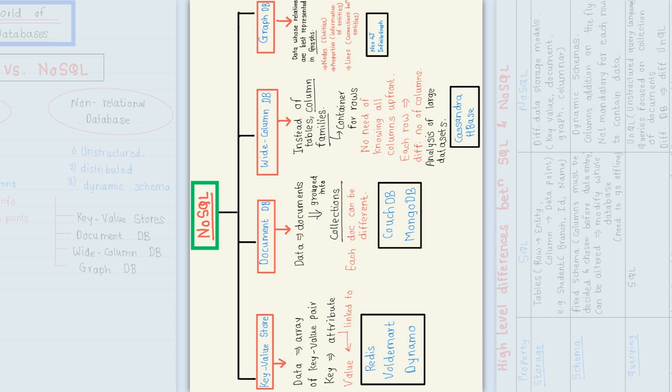Within NoSQL, there are multiple different types. For key-value store, you go for Redis or DynamoDB. For document-based databases, you go for MongoDB or CouchDB. For wide column databases, you go for Cassandra or HBase. For graph-based databases — where you need to show a graphical view — you can go for Neo4j. These are all the many different options available.